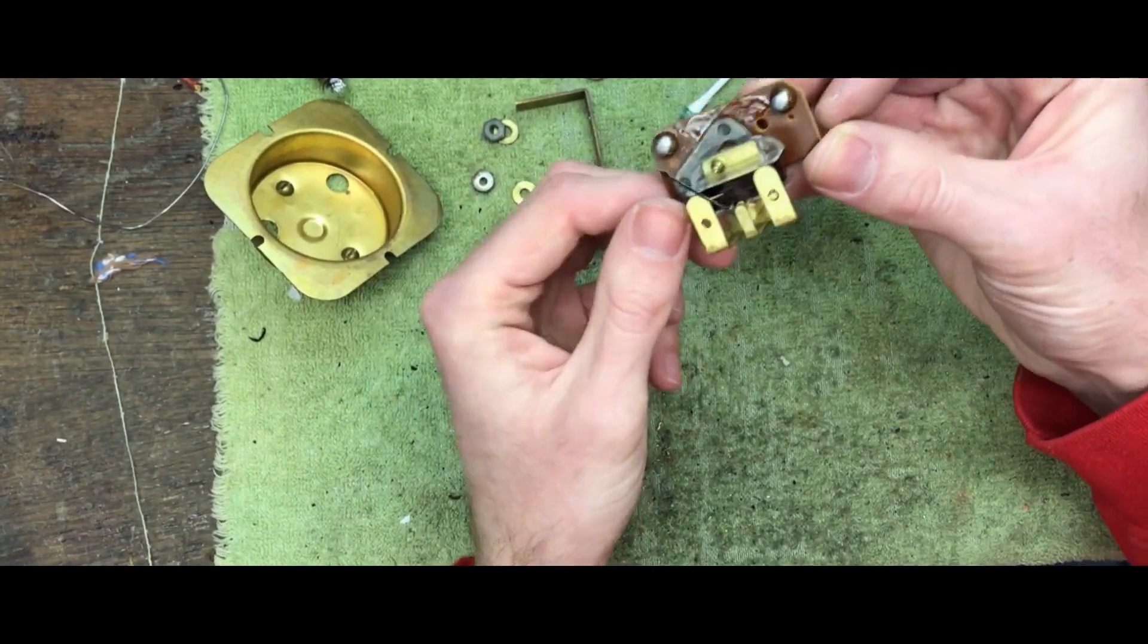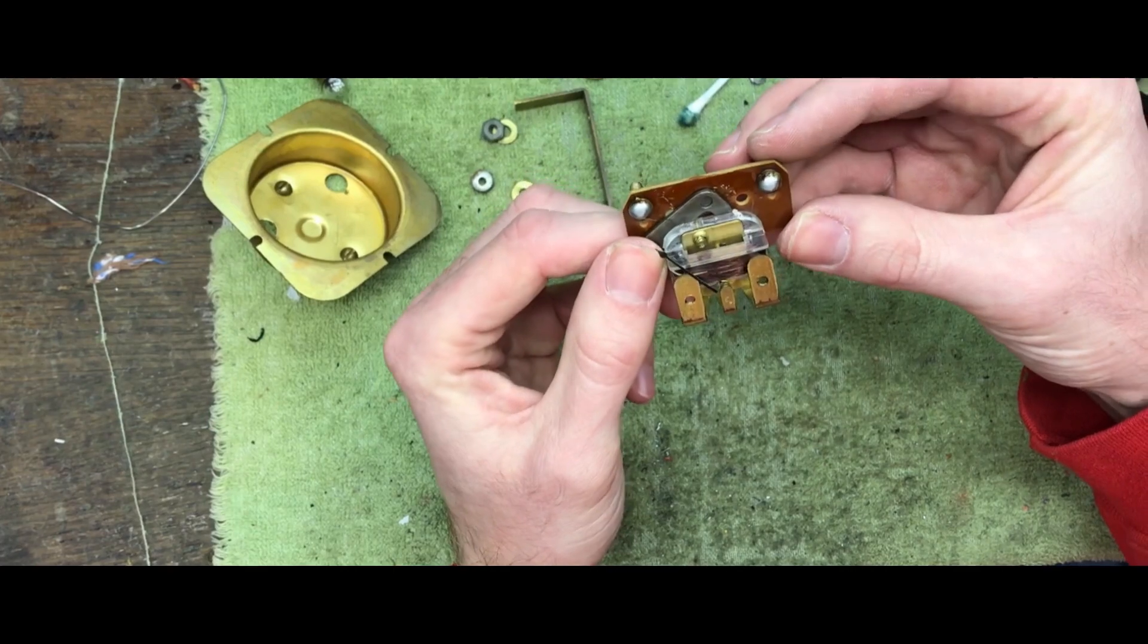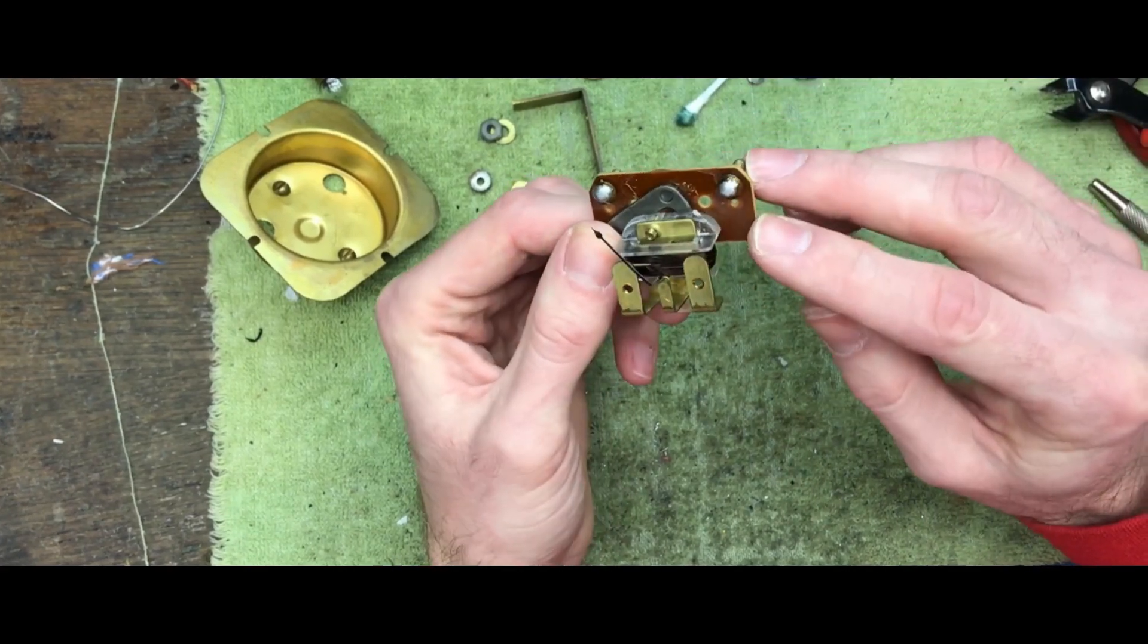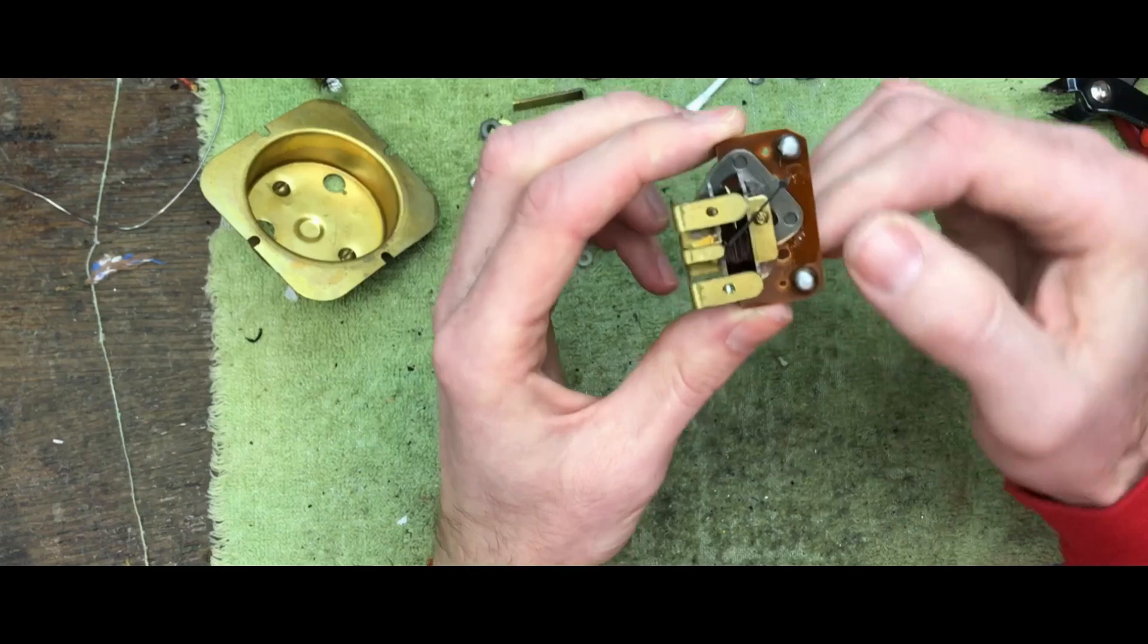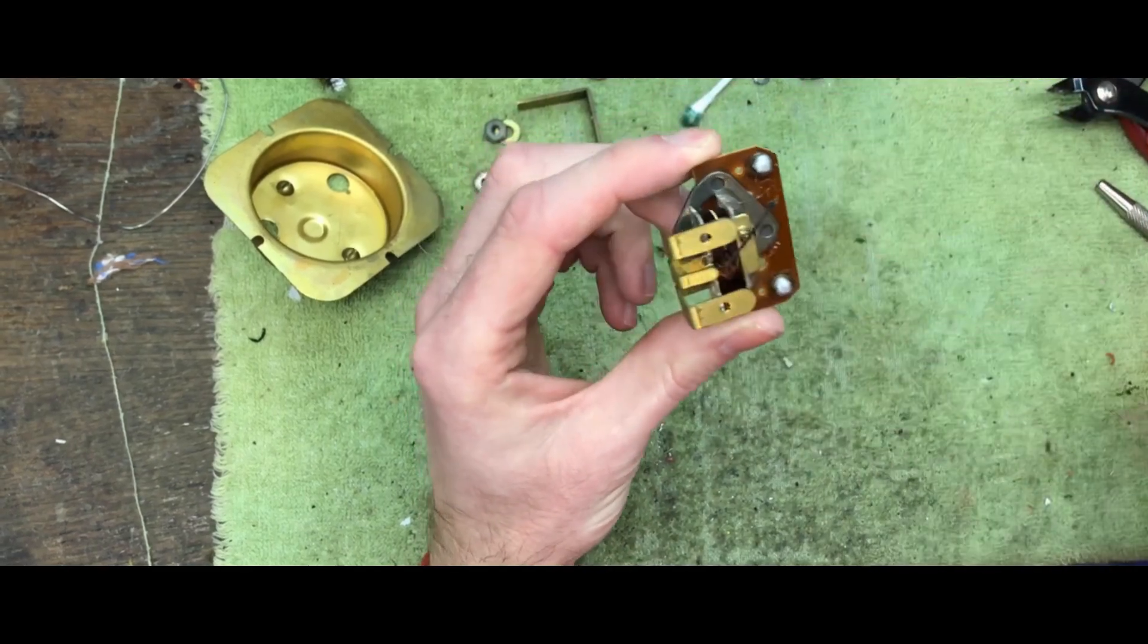Now this is a very very fine wire in here. This is like hair thin wire. And then there is this metal piece here.